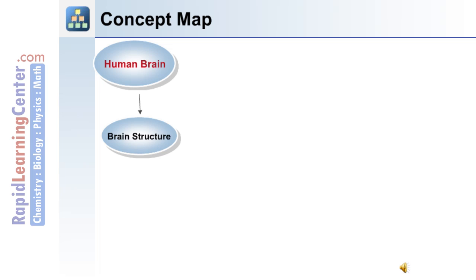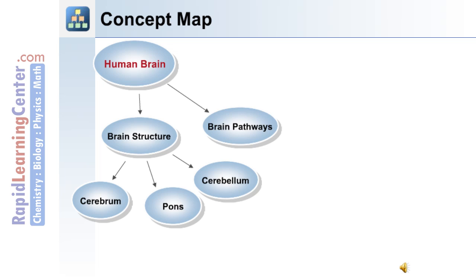In this tutorial we'll cover the brain structure including the cerebrum as well as the pons and the cerebellum. We'll also look at brain pathways which connect the brain, the spinal cord, and the peripheral nervous system, motor pathways, as well as sensory pathways.